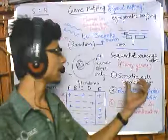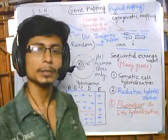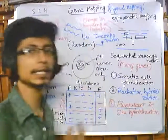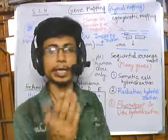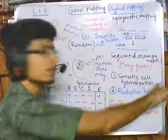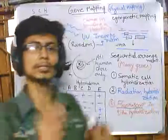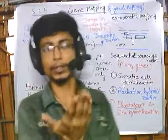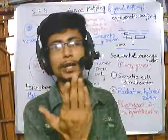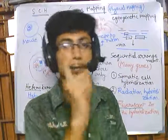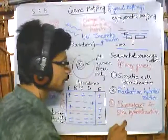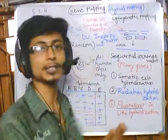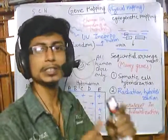In both somatic cell hybridization and radiation hybridization, we are indirectly placing the gene onto the map. We are looking at many different cell lines and from that we can tell that two genes are placed in a particular chromosome, but none of this is done under direct observation. You cannot visualize the genes. But the third type — fluorescent in-situ hybridization, or FISH — is a technique in which we can actually visualize those genes and see where they are present.